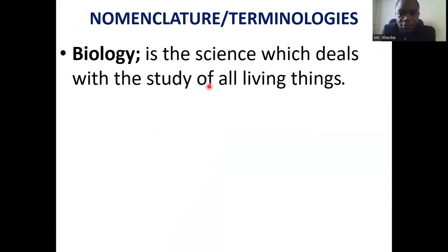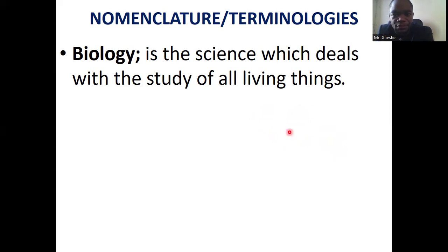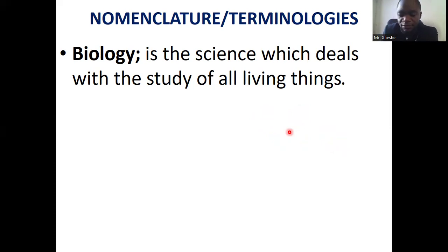These are some of the important definitions you must know. The first one is biology. Biology is a science that deals with the study of all living organisms — organisms that have the ability to perform a special process known as metabolism. In addition, organisms have the ability to reproduce and pass on genes to the next offspring. Human beings are biological beings.